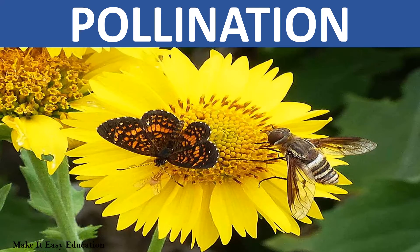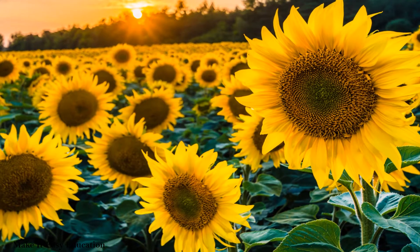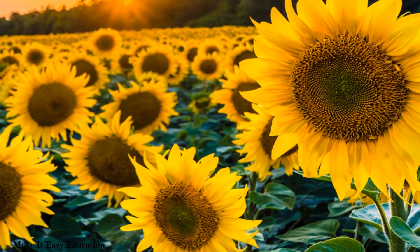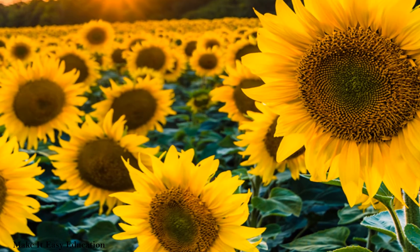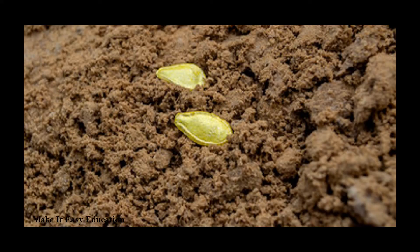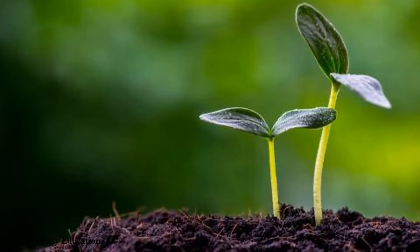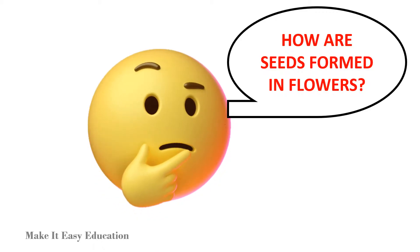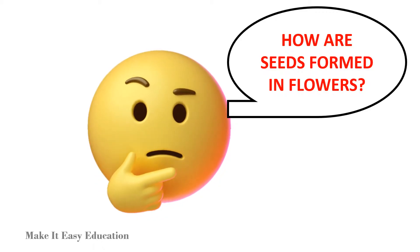Pollination. Flowers are the reproductive part of the plant. Flowers help to make seeds. When the seeds fall on the ground, they give rise to a new plant. Do you know how seeds are formed in flowers?